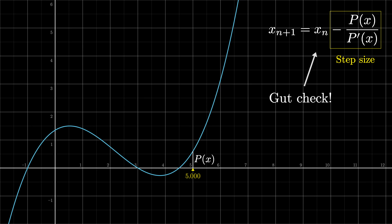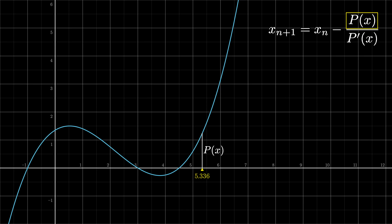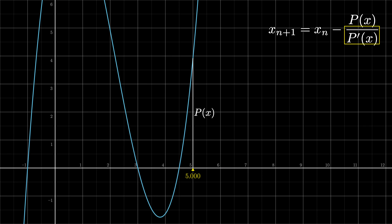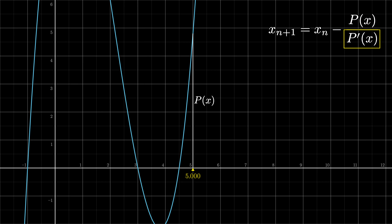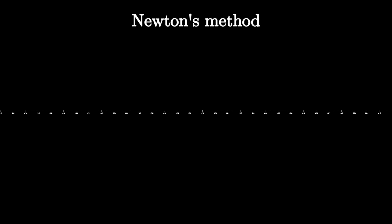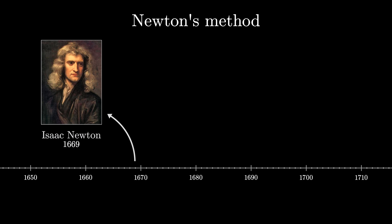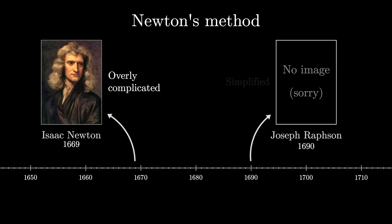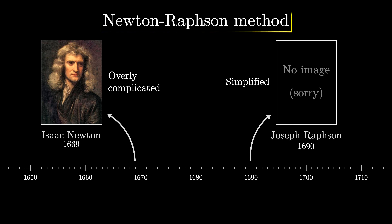It's always worth gut-checking that a formula makes sense. If p(x) is large — meaning the graph is really high — you need to take a bigger step to get down to a root. But if p′(x) is also large — meaning the graph is quite steep — you should ease off on how big you make that step. As the name suggests, this was a method Newton used, though he made it look more complicated than needed. A fellow named Joseph Raphson published a much simpler version, so you often hear this called the Newton-Raphson method.